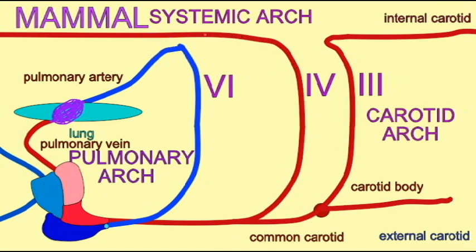And so during embryonic development, the ancestral pattern of aortic arches found in fish is modified to yield the adult circulatory pattern found in mammals.